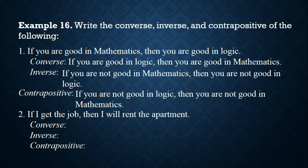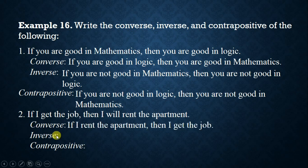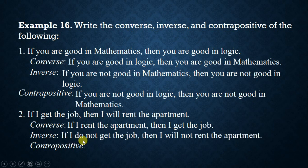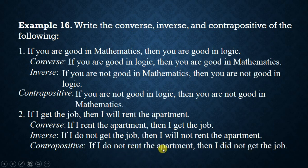Number two: if I get the job, then I will rent the apartment. The converse (Q implies P) is: if I rent the apartment, then I get the job. The inverse (not-P implies not-Q) is: if I do not get the job, then I will not rent the apartment. The contrapositive (not-Q implies not-P) is: if I do not rent the apartment, then I did not get the job.